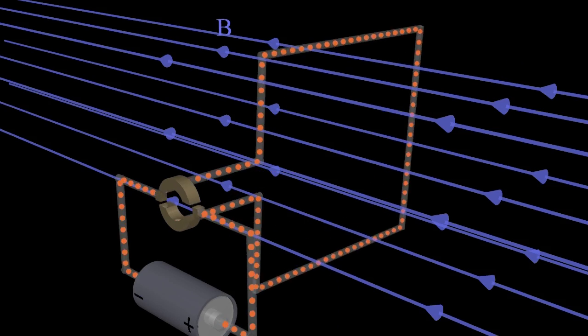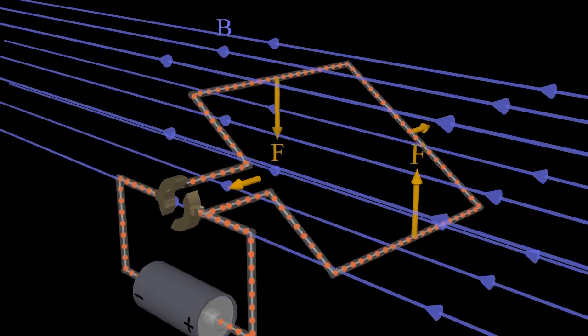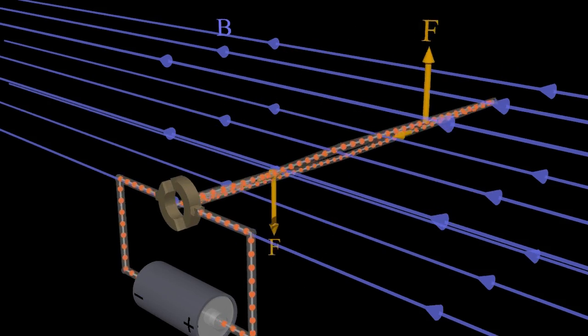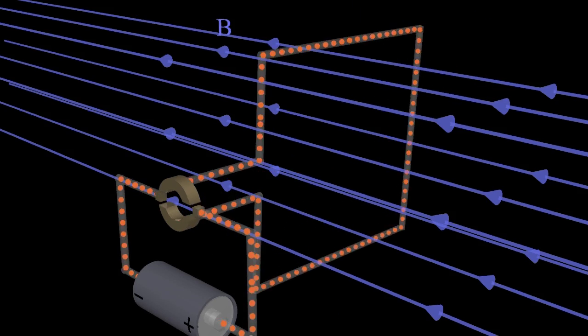In this virtual model, the flow of conventional current is represented by the moving red balls. The magnetic field is represented by the blue lines.